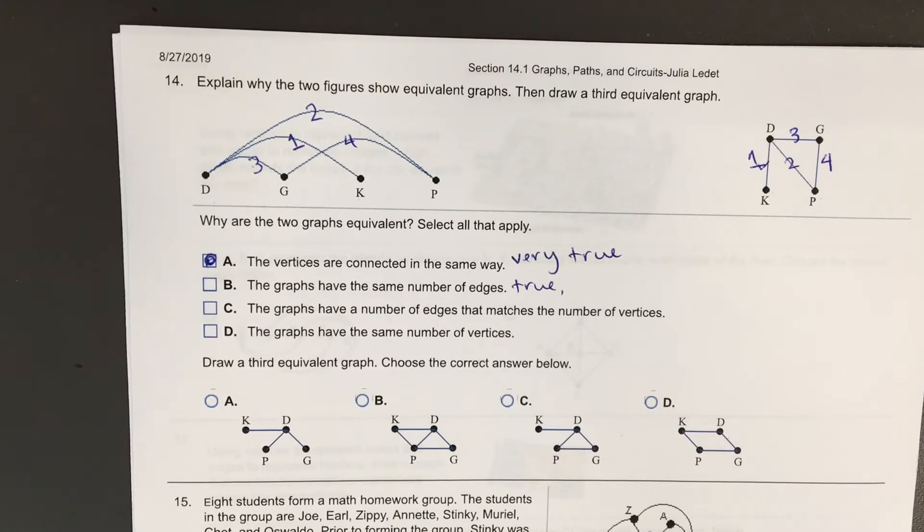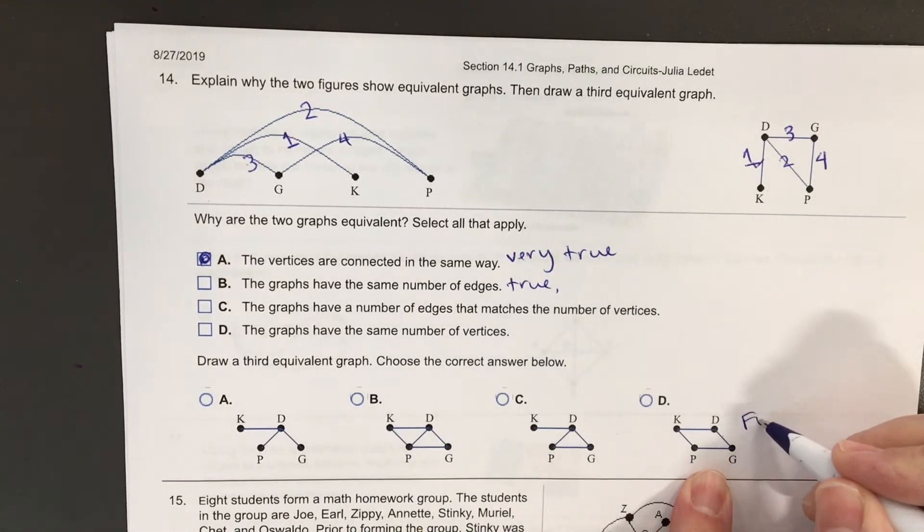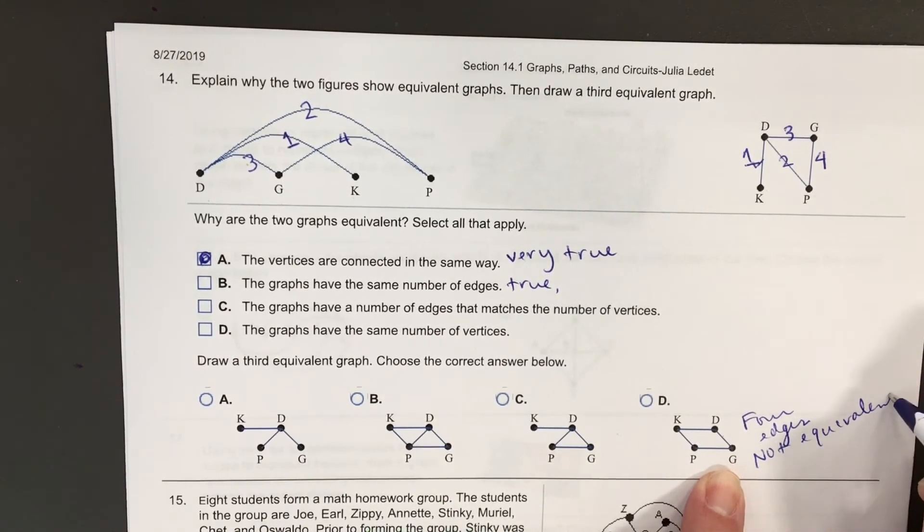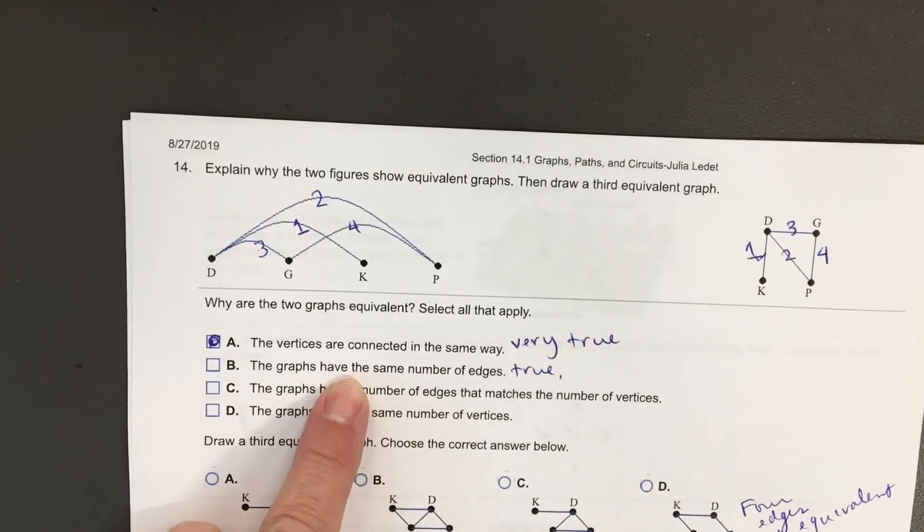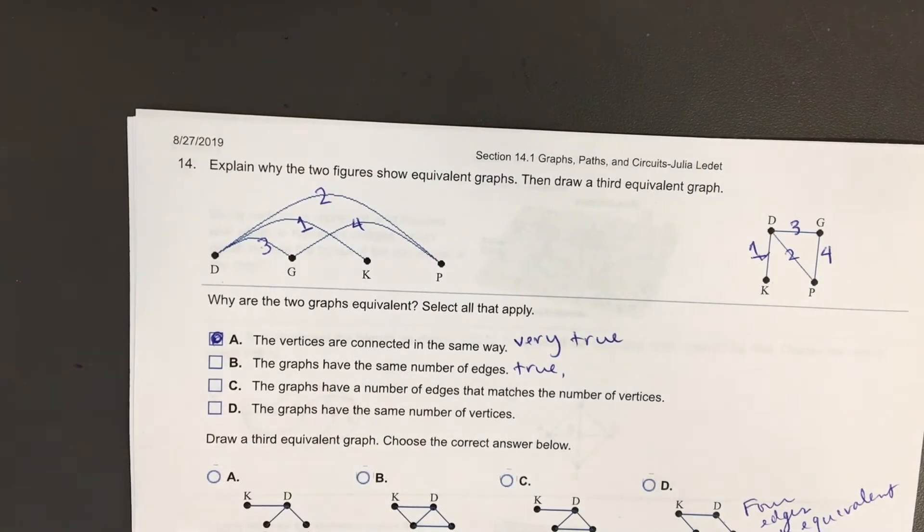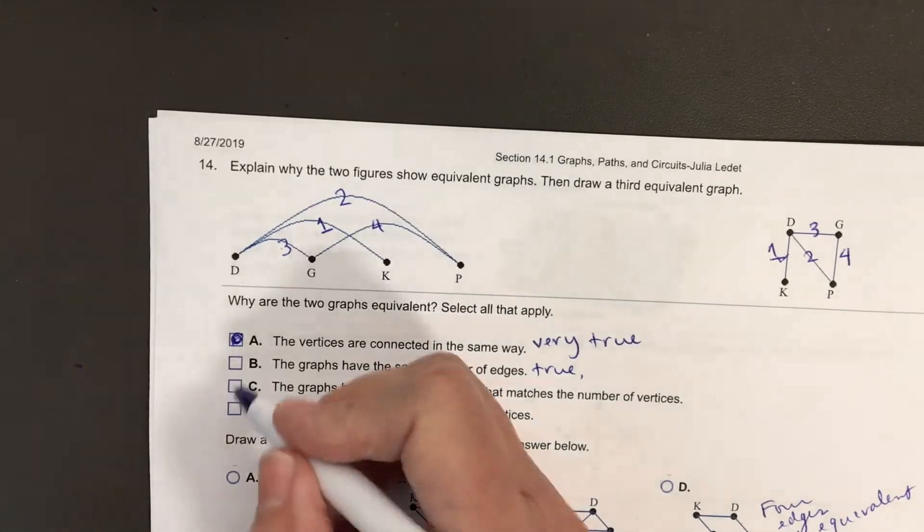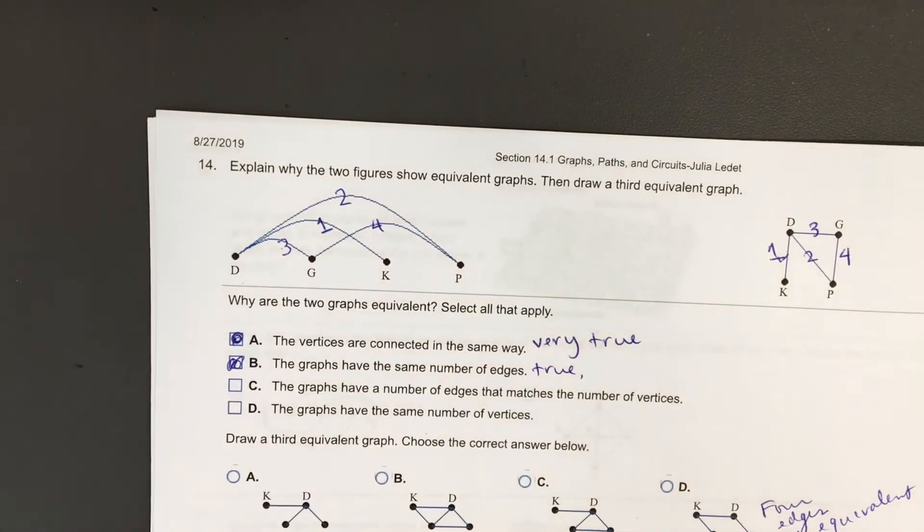D has four edges. C, this one has four edges. But this one's not equivalent to the ones we're looking at. So this condition by itself is not something that would specify equivalent graphs. But you know what? The computer's expecting you to select that. And if you don't, it's going to mark it wrong.